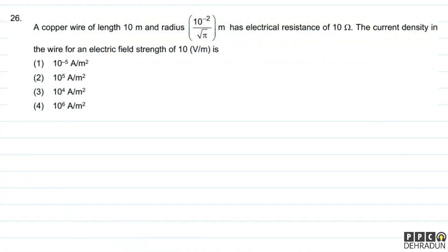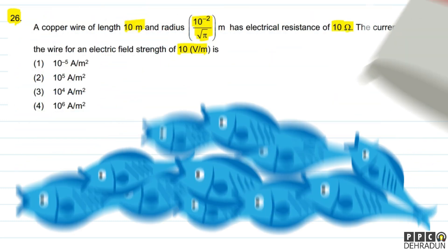Let's have a look at question number 26. The question says: a copper wire of length 10 meter and radius 10 to the power minus 2 upon root pi meter has electrical resistance of 10 ohm. The current density in the wire for an electric field strength of 10 volt per meter is — and there are 4 options.